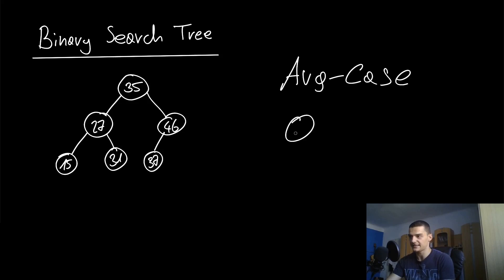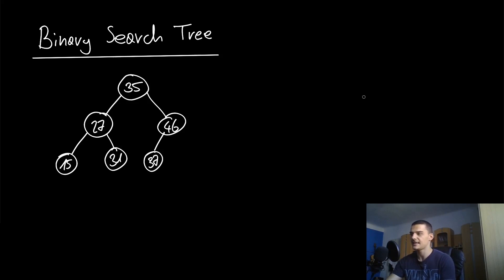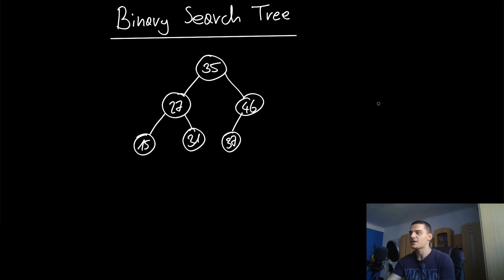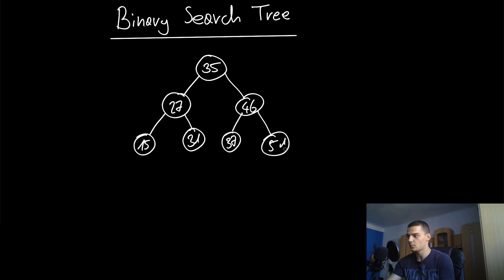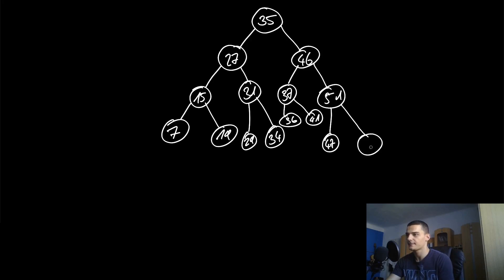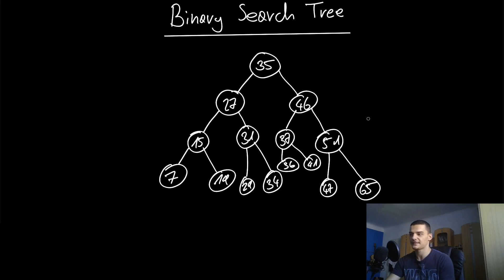However, in binary search trees this is not the case. On average you end up with a runtime complexity that is logarithmic — theta of log n. The worst case still remains linear, but in a typical balanced tree you get logarithmic runtime. To illustrate this, let's extend the tree: add 51, 7, 19, then a value between 27 and 31 such as 34, then 36, 41, 47.